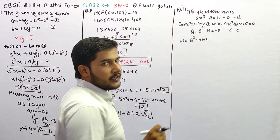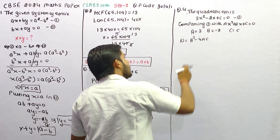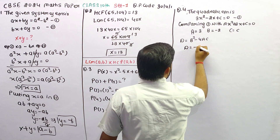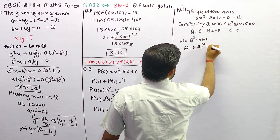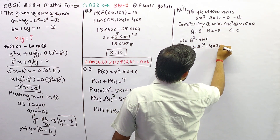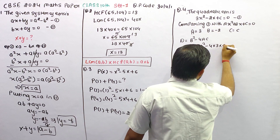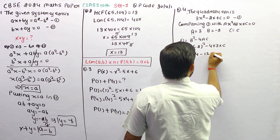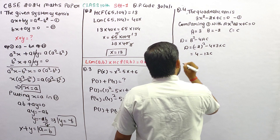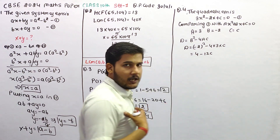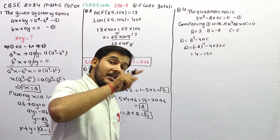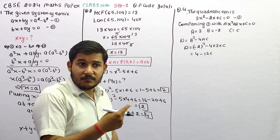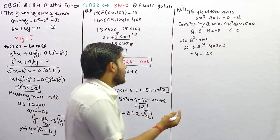अब यहाँ पर discriminant हमें दे रखा है। b क्या है — हमारे पास minus 2 का square, minus 4 into 3, और capital C की value small c थी। यारी 4 minus 12c — यह discriminant हमने निकाल लिया है। और एक discriminant हमें question में दे रखा है। तो दोनों आपस में equal होंगे।